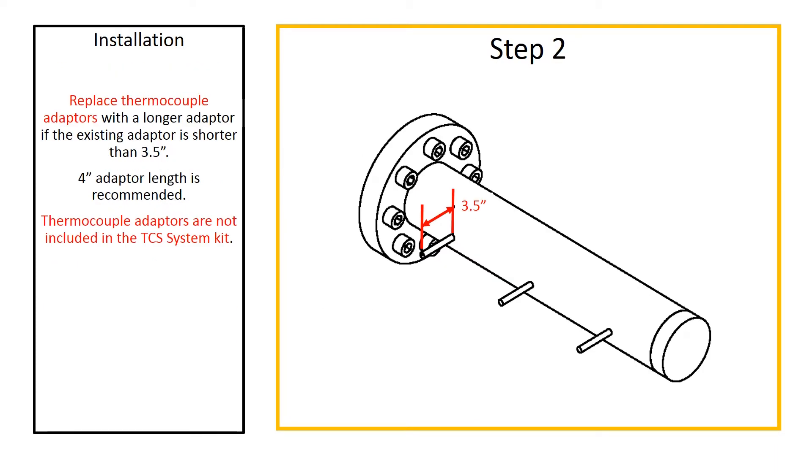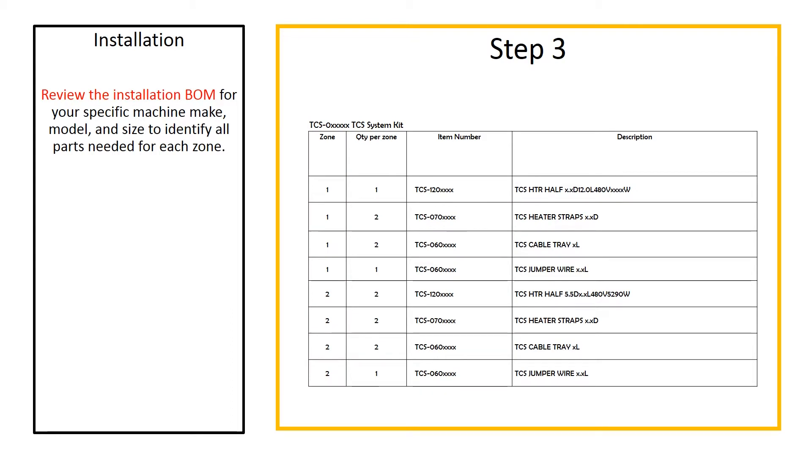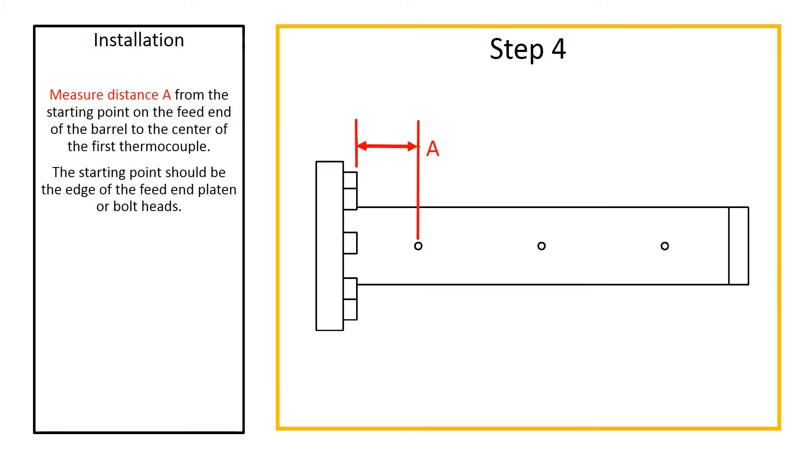Replace the thermocouple adapters with the longer version discussed earlier. Again these are not included with the TCS kit. The bill of material should be reviewed to verify the kit is complete and then the distance from the end of the installed system to the first thermocouple should be measured to define where the first TCS section will be placed. Be sure the area is clear of any hardware such as bolt heads that may interfere with the TCS section.